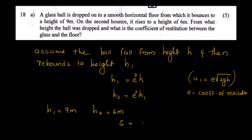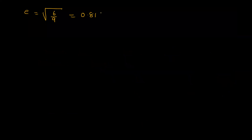6 is equal to e squared into 9. Therefore, e squared is equal to 6 by 9. So e is equal to the square root of 6 by 9, that is, 0.81649.